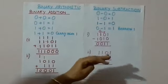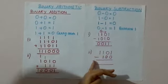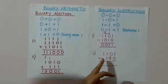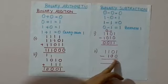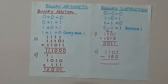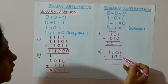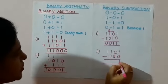Now, leave one line and write down the next question: 1101 minus 100. How to do this? Again, 1 minus 0 means 1, so I will write 1 here.